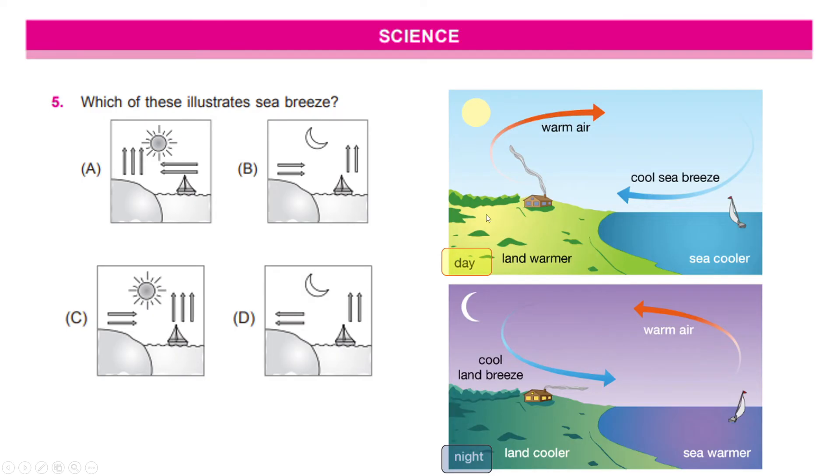Daytime, what happens is whenever the breeze is cooler, that means it will move to the warmer place. And since the land is warmer, the warm air will go up. And this phenomena is during the daytime. But in nighttime, the land is cooler than the sea. So, the cool land breeze goes into the sea. And since the sea has more heat, it becomes warmer and it goes up in the sky as warm air. So, this indicates that the right flow would be option A. I hope you have understood this.